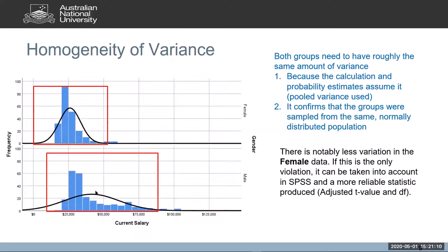The second underlying assumption of a t-test is homogeneity of variance, which is about the variability in your distributions. The variability in current salaries for females is quite a bit smaller than it is for males. If you had randomly sampled from the same population, you would have the same variability in both groups. The probability estimates assume both normality and homogeneity of variance, so when those assumptions are violated, those probability estimates are incorrect.